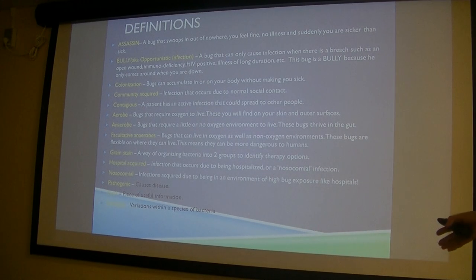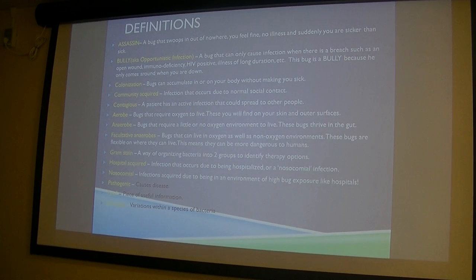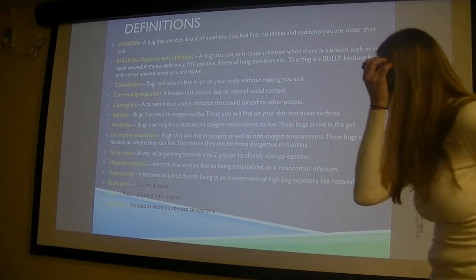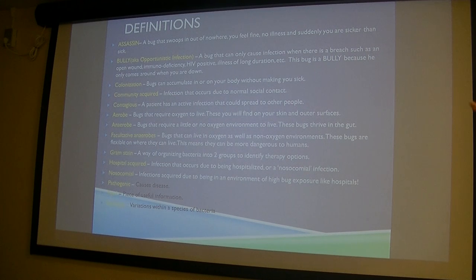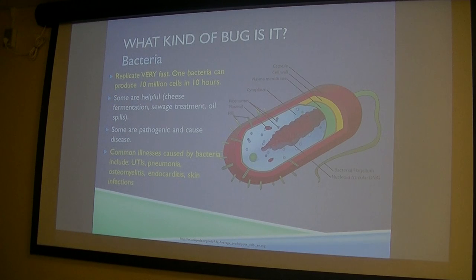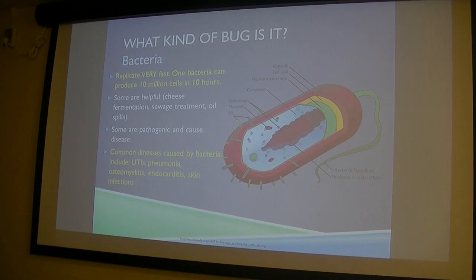We're going to talk about gram stains, hospital-acquired or nosocomial infections, and pathogens. The word 'pearl' I use often to define something that might be of use to you — pearls of wisdom I've borrowed from others. We'll also talk about serotypes, which are variations within a species of bacteria. One thing to remind ourselves: bacteria are a lot like us — they're cells with many of the same organelles — but they are wicked fast at replicating.